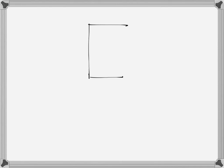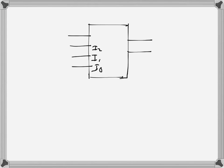Before talking about priority encoders, let's consider an ordinary encoder. A 4-by-2 ordinary encoder has four input lines and two output lines. The inputs are i0, i1, i2, and i3, and there may be an enable. The outputs are x0 and x1.